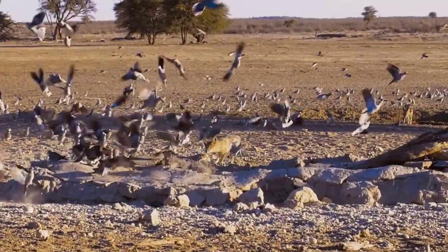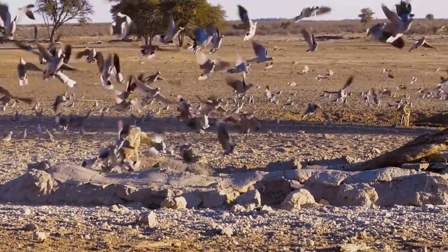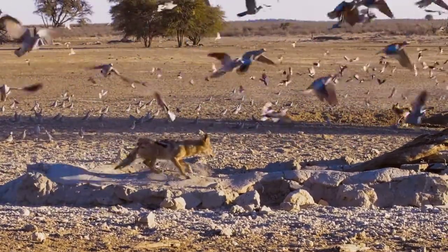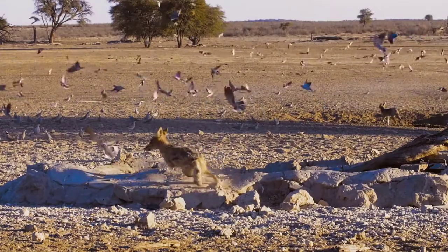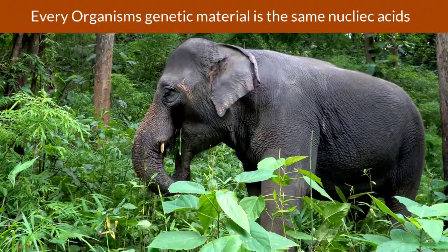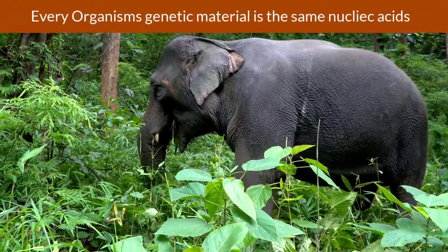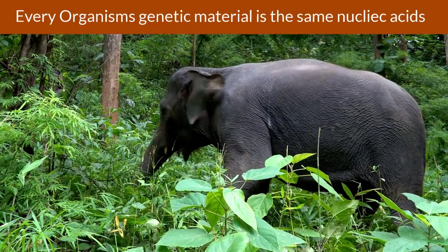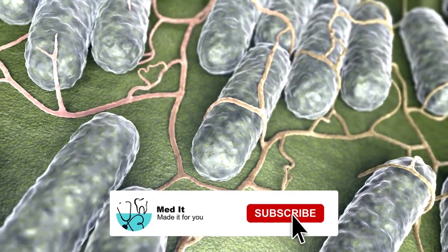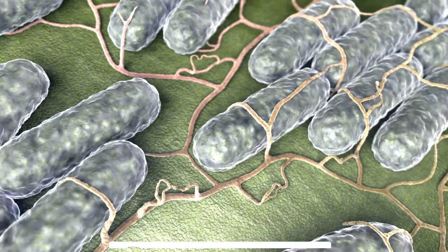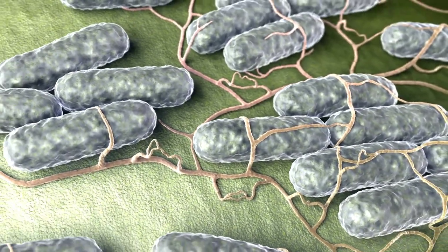Every living organism has a genome and the size of the genome varies from species to species. An elephant uses the same form of genetic information as the grass it eats and the bacteria in its gut, but no two genomes look exactly alike.